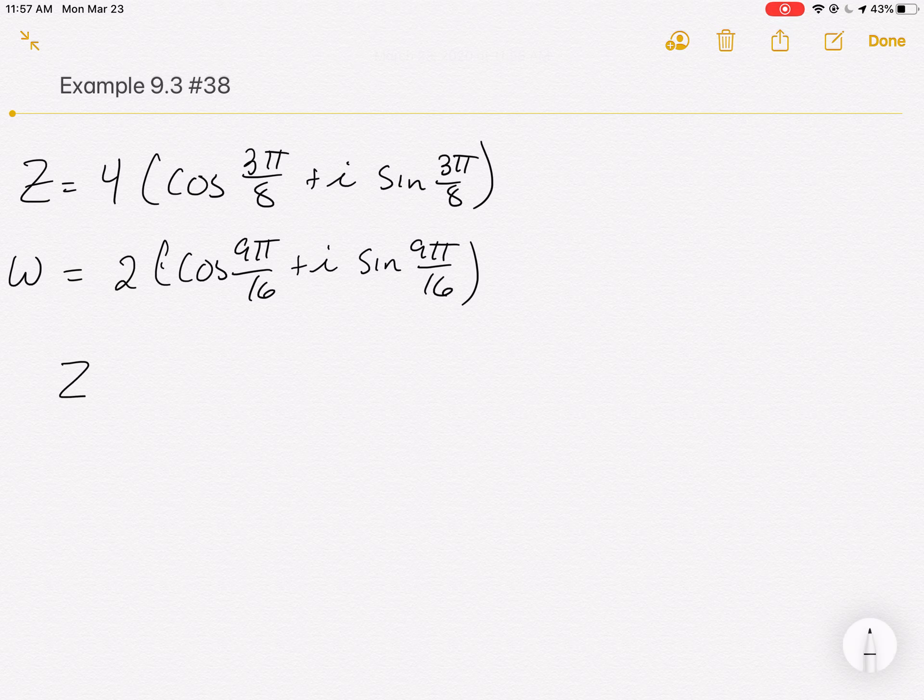If you remember, we're going to multiply these z times w. That's what they'd like us to do. And there's a very nice way for that to happen. What happens is you multiply the r's and add the angles. And that's it. So you've seen that already as you've read through the book.